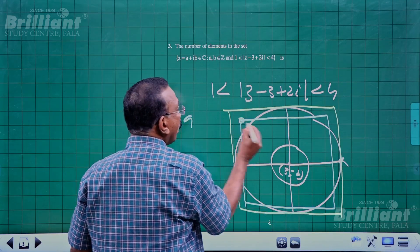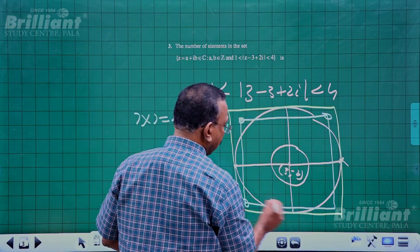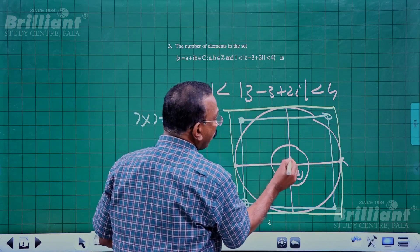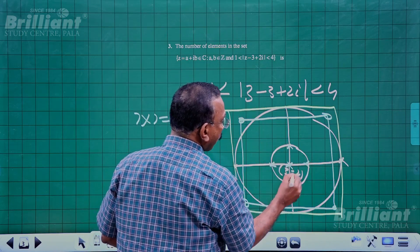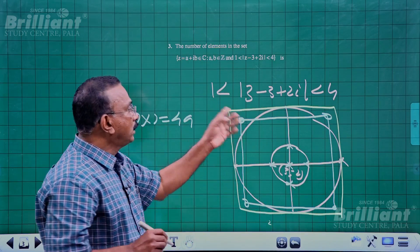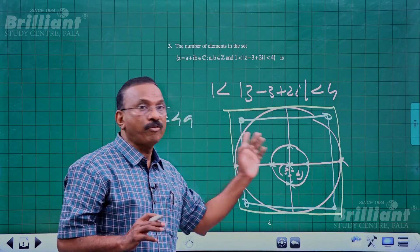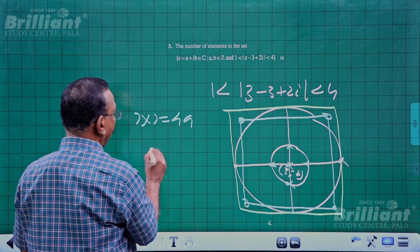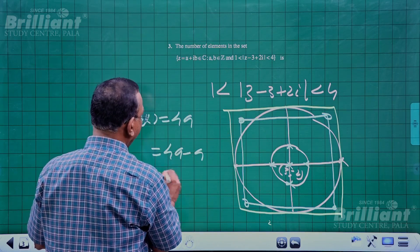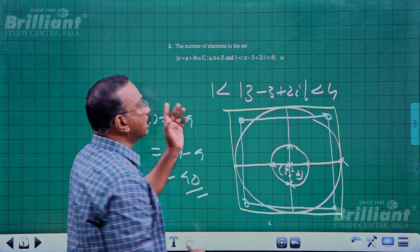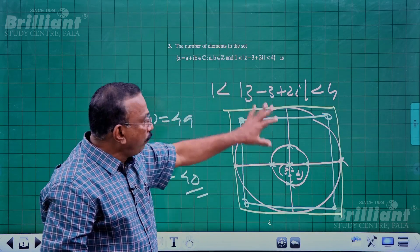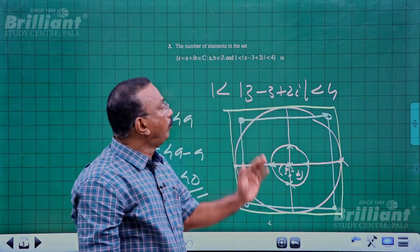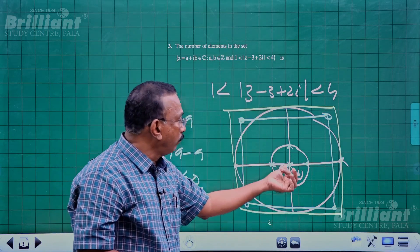Points outside the circle of radius 4 should not be counted, and points within the inner circle of radius 1 should also be excluded. There are 4 corner points and 5 other excluded points — 9 points in total must be removed. So the required count is 49 - 9 = 40.